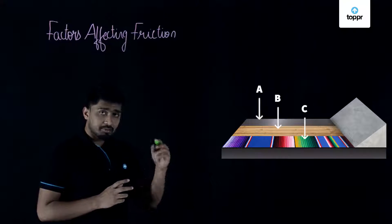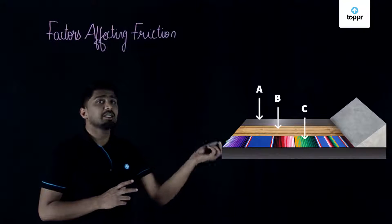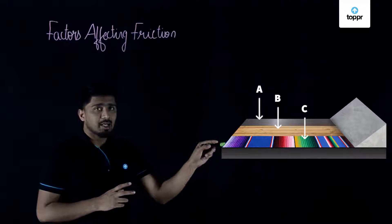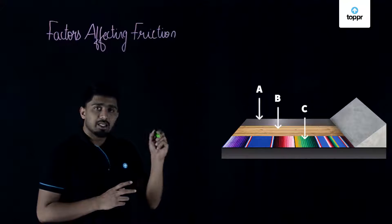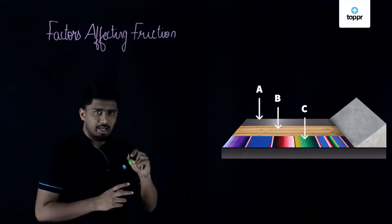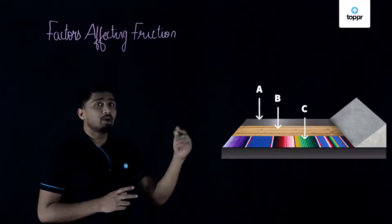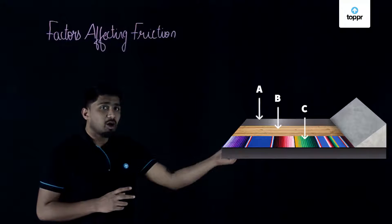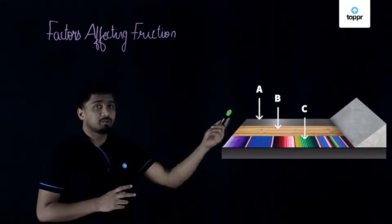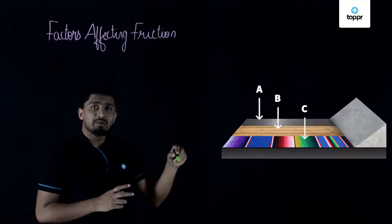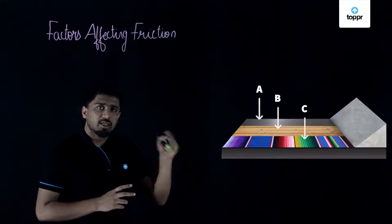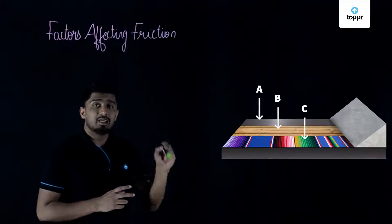Which means on the smooth surface the friction was very less and on the rough surface the friction was very high. Because of that the box had covered the maximum distance on the smooth surface and the minimum distance on the very rough surface.